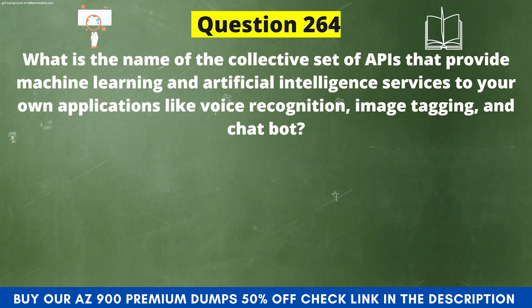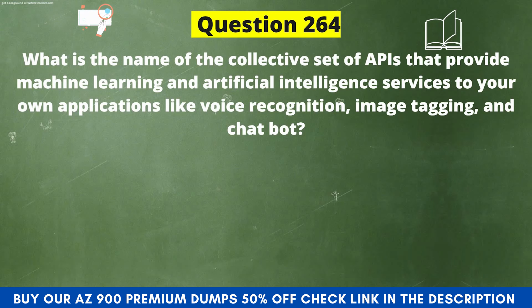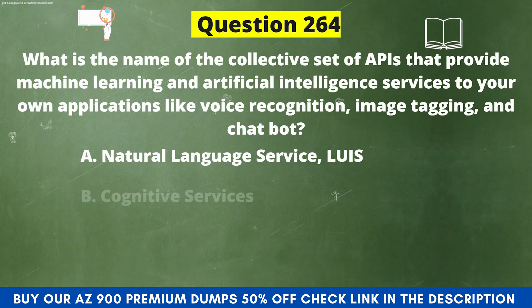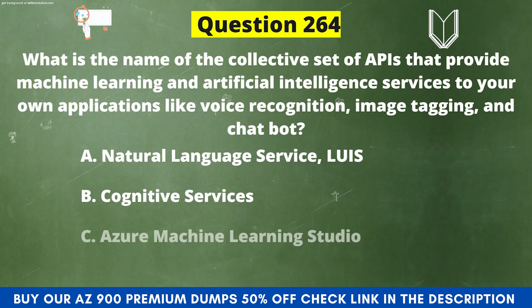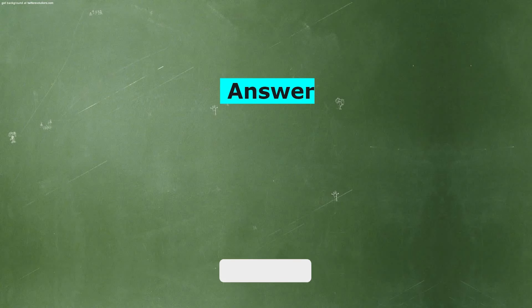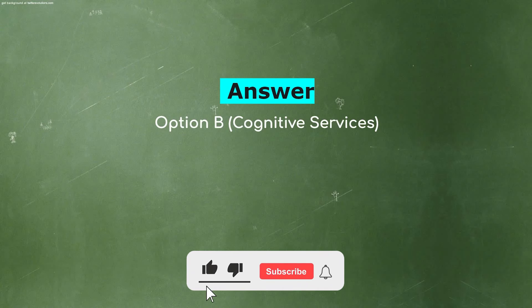What is the name of the collective set of APIs that provide machine learning and artificial intelligence services to your own applications like voice recognition, email tagging and chatbot? Option A, Natural Language Service, LUIS. Option B, Cognitive Services. Option C, Azure Machine Learning Studio. Option D, Azure Batch. And the correct answer is Option B, Cognitive Services.